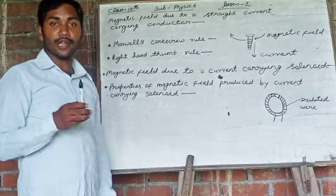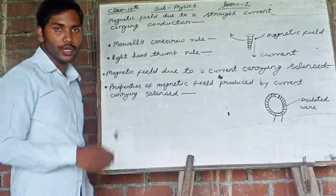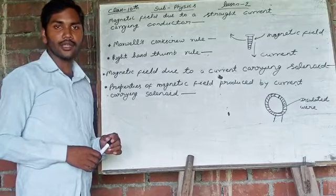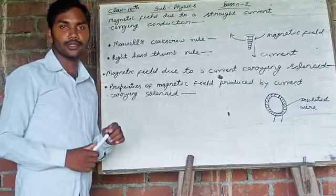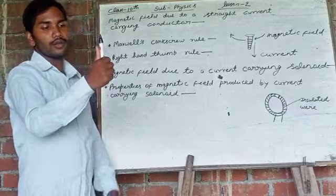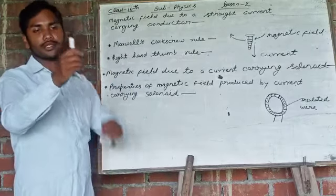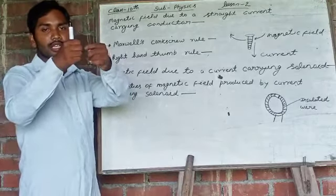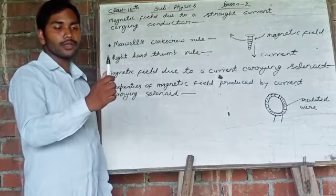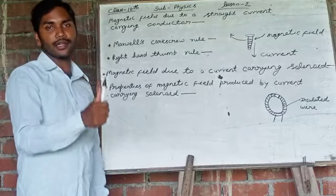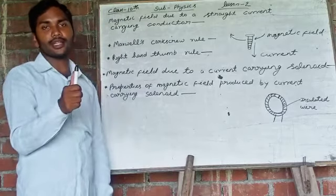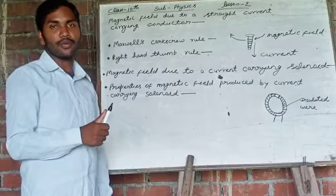This rule is also known as the right hand thumb rule. According to the right hand thumb rule, if we hold a current carrying conductor in our right hand such that the thumb points in the direction of current, then our encircling fingers will show the direction of magnetic field.